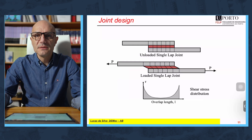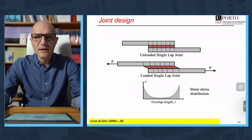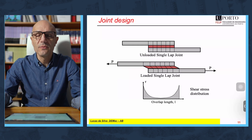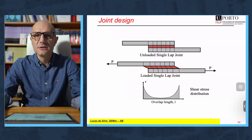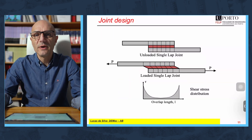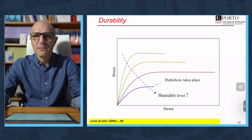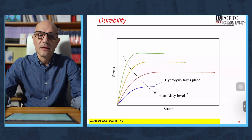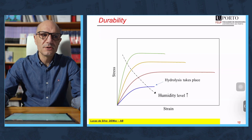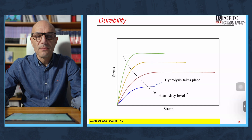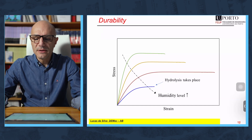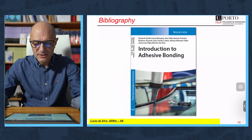Then comes one of the most important chapters: joint design, where we will calculate and predict the joint strength in the long term and in the short term. Short term is quite easy; long term is more difficult. We are talking about durability — what will be the effect of water, temperature, fatigue, or creep in 10 or 20 years? Those are perhaps the major challenges at the moment in this technology.